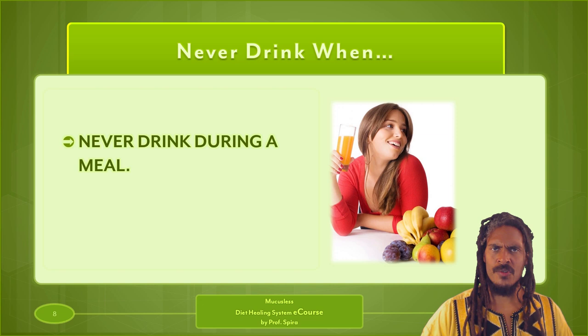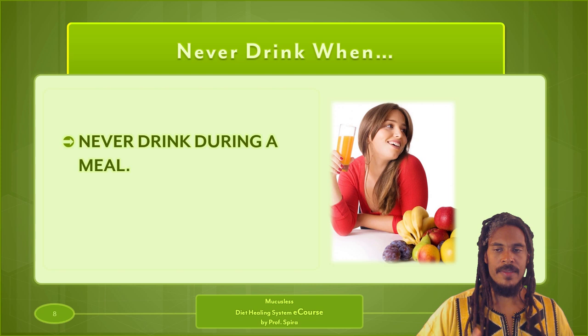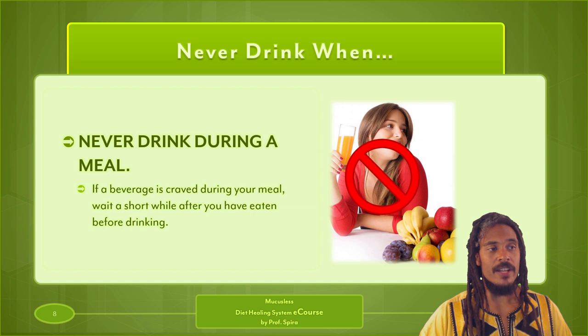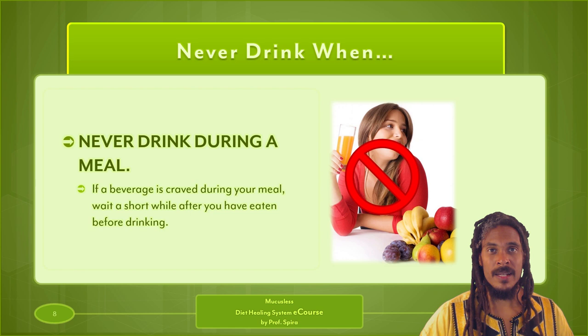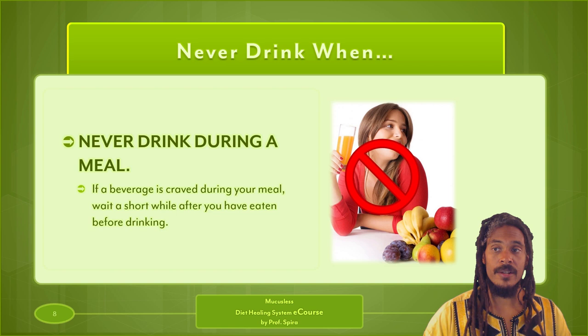When I started, I simply didn't have a drink around while eating. If a beverage is craved during a meal, wait a short time after eating before drinking. Early on I might wait five or ten minutes, which isn't really long enough. Eventually I got to waiting an hour or an hour and a half after a meal. Now I don't drink anything after an evening meal until the next morning or afternoon.